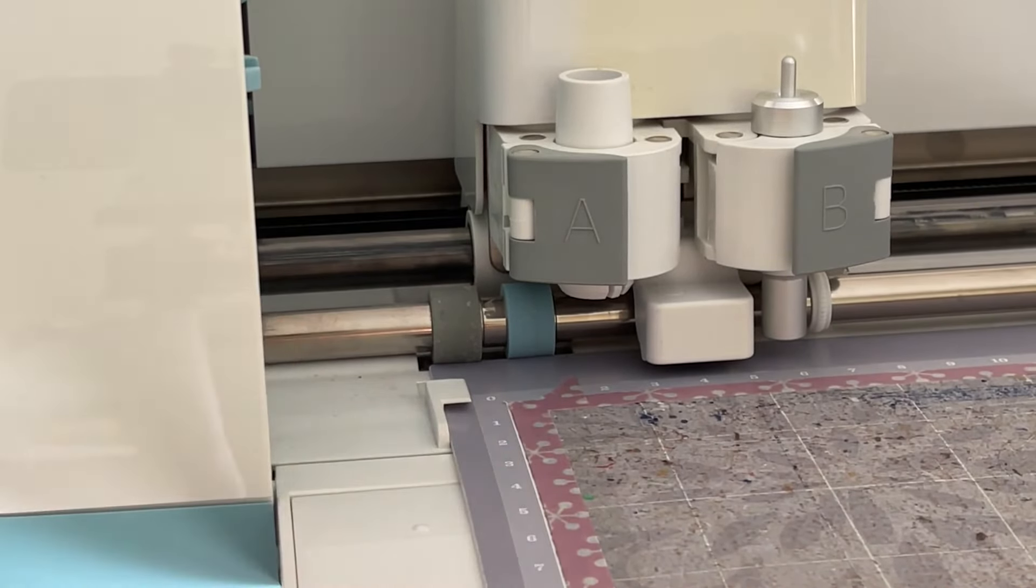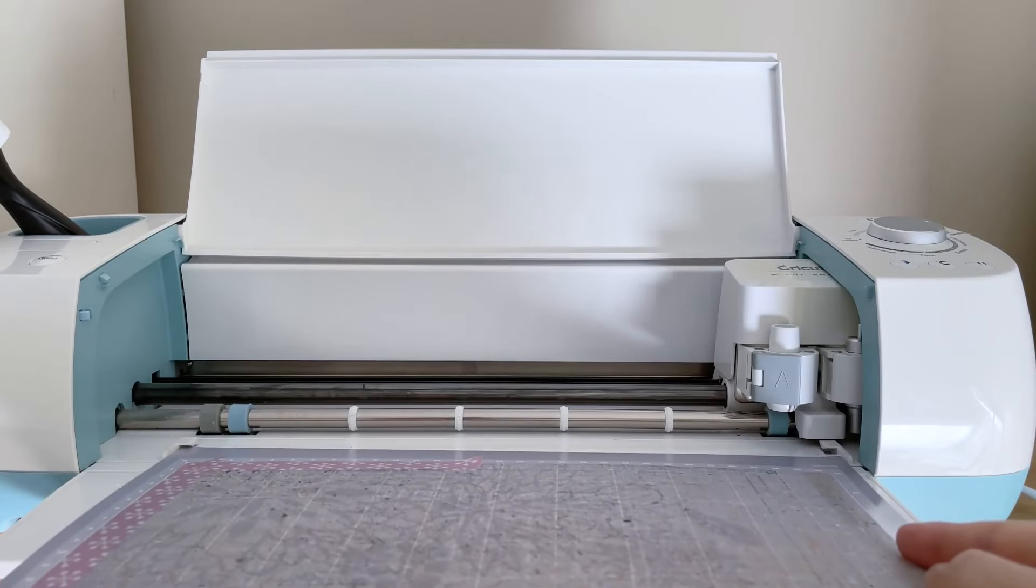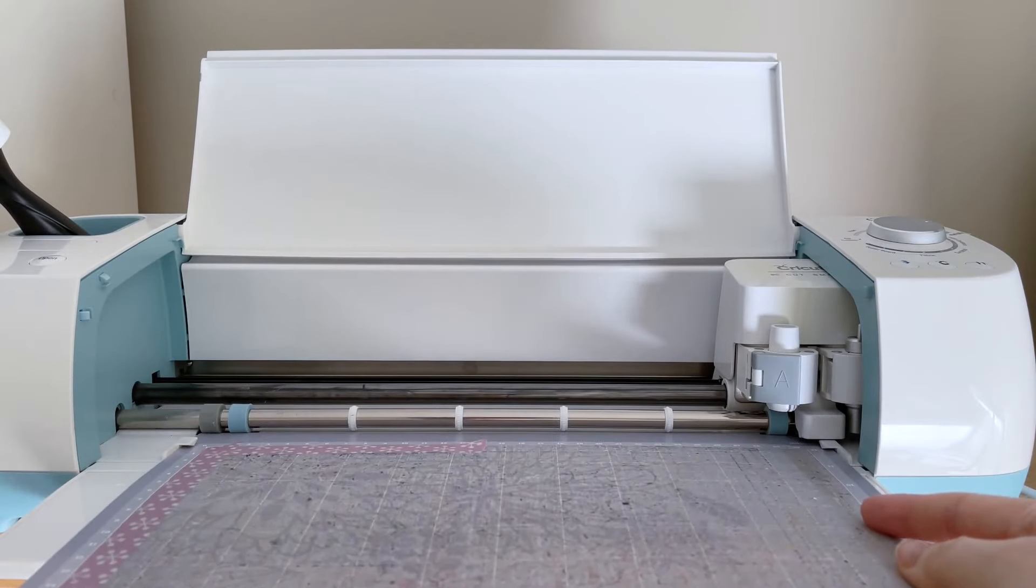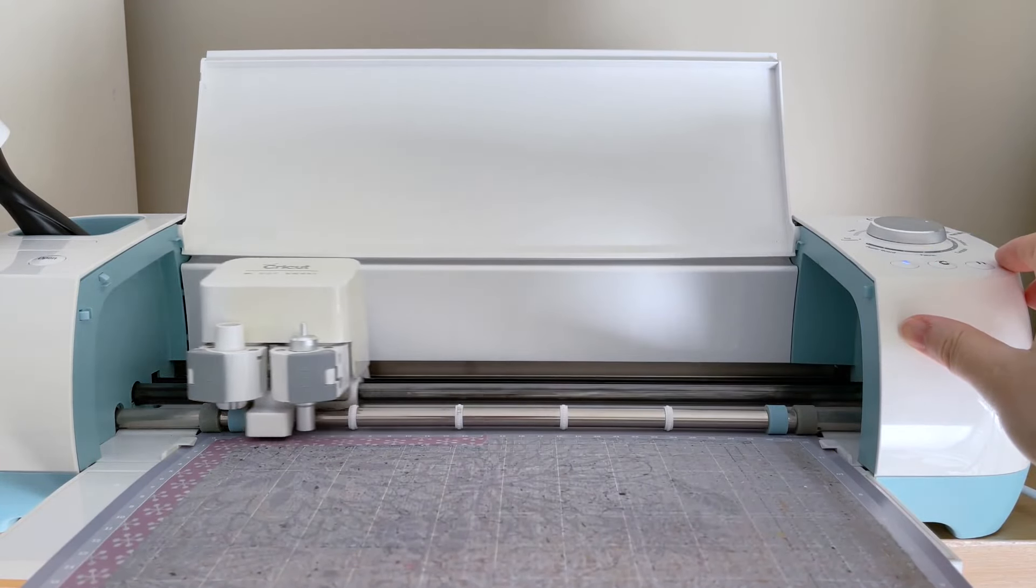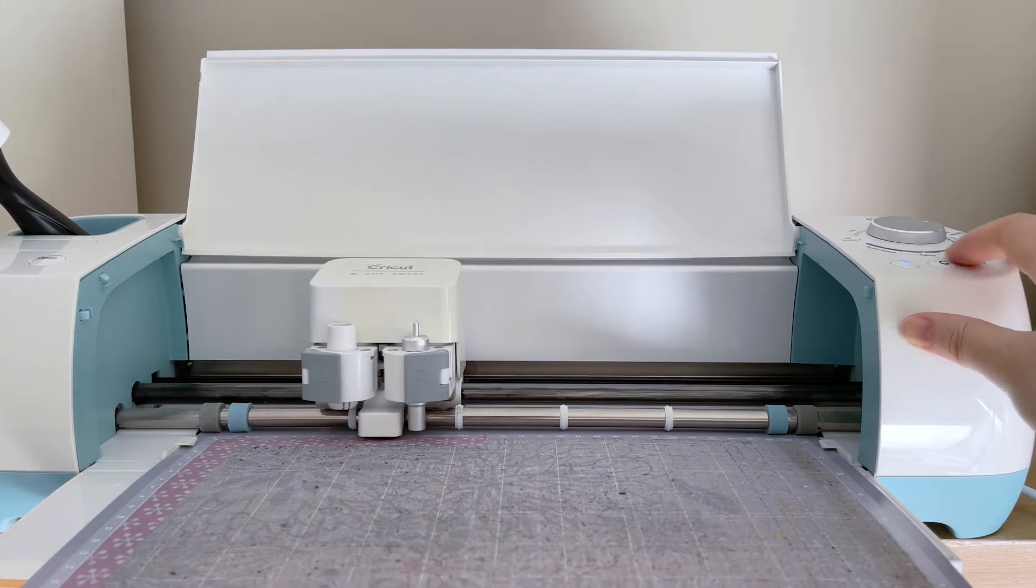So when I cut my washi tape I made sure I loaded my mat carefully along the left guide and not just throw it into my cutter. When I go to cut my circle template I'll again load it with care and be mindful of how I'm aligning with the guides to achieve the most consistent cuts possible.